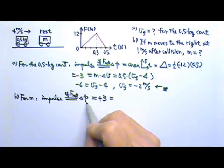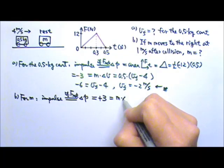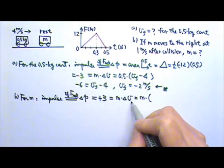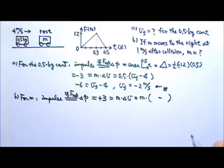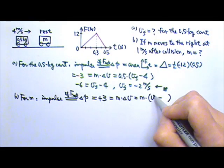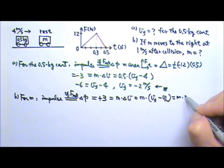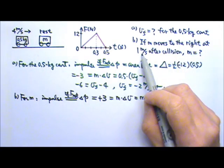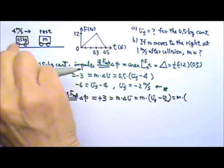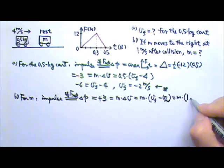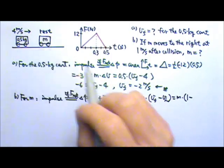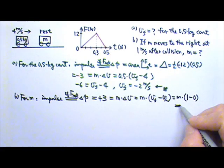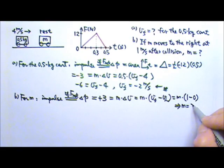That positive 3 equals the change in momentum, M times delta V. We don't know the mass — that's what we're solving for. Delta V is the final velocity minus the initial velocity. The final velocity is given as 1 m/s to the right, so positive 1. The initial velocity is 0 because the second cart starts at rest. This gives us a mass of 3 kg.